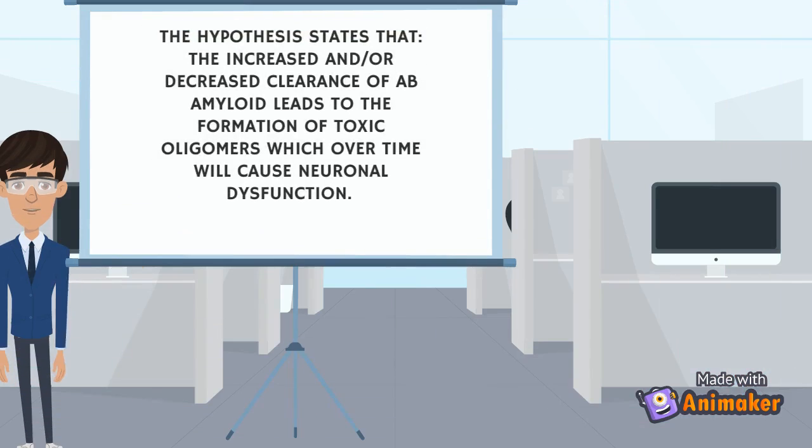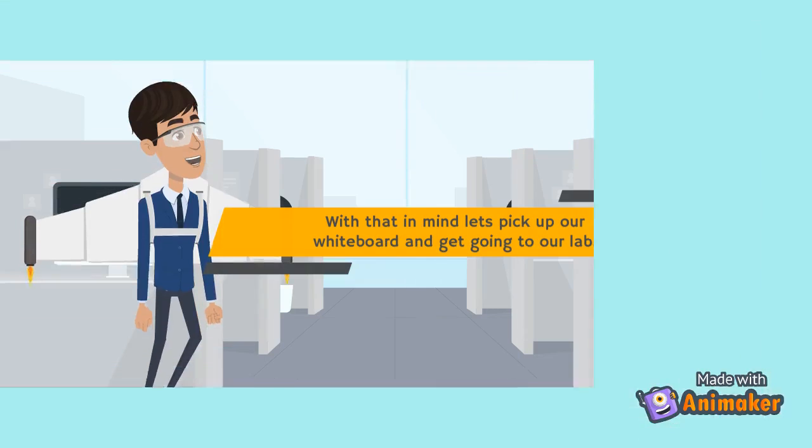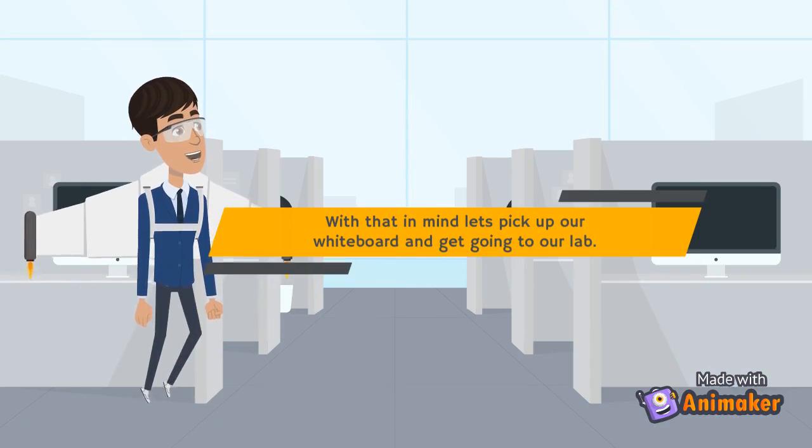And before we get to the lab to further explore this topic, I want to define what the A-beta amyloid cascade hypothesis states. It states that the decreased clearance or increased production of A-beta amyloid will lead to the formation of these toxic polymers. And the accumulation of those will then eventually cause neuronal dysfunction. With that information in mind, let's get going, let's pack up our whiteboard and get to our lab.